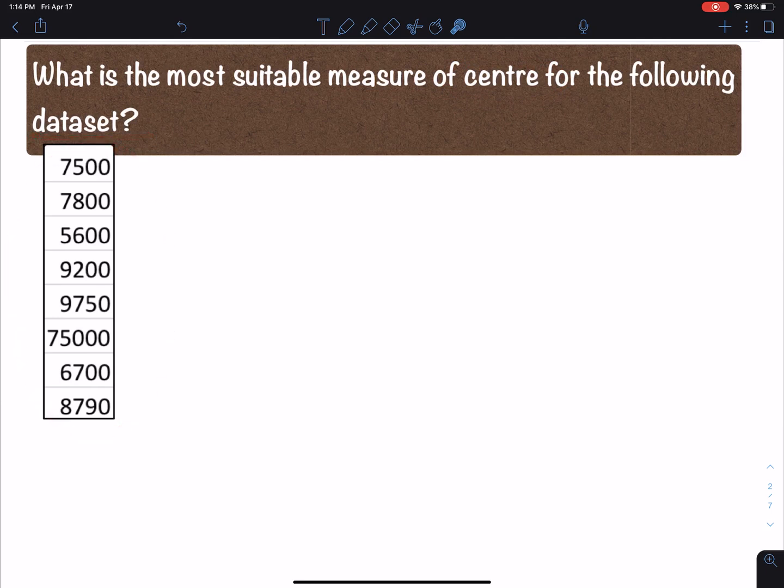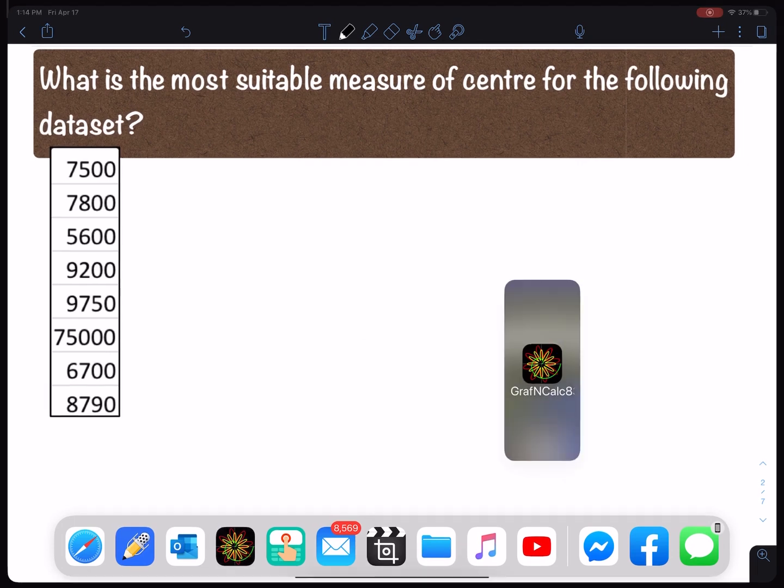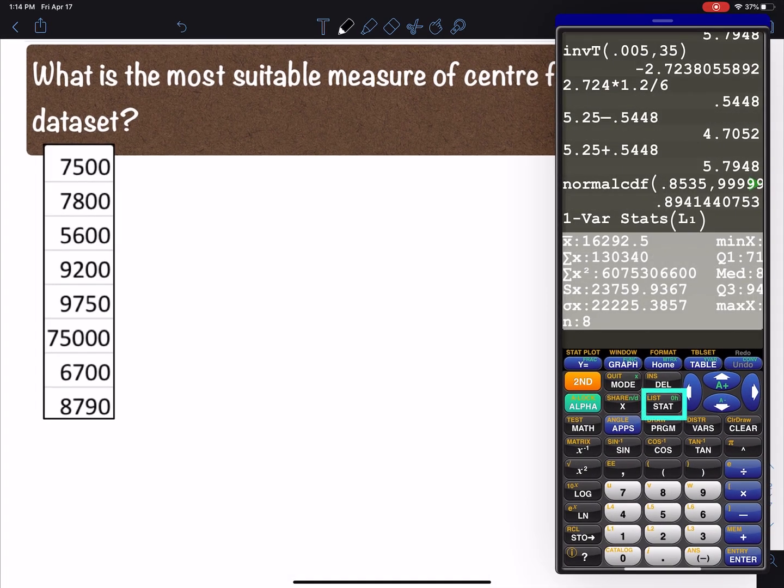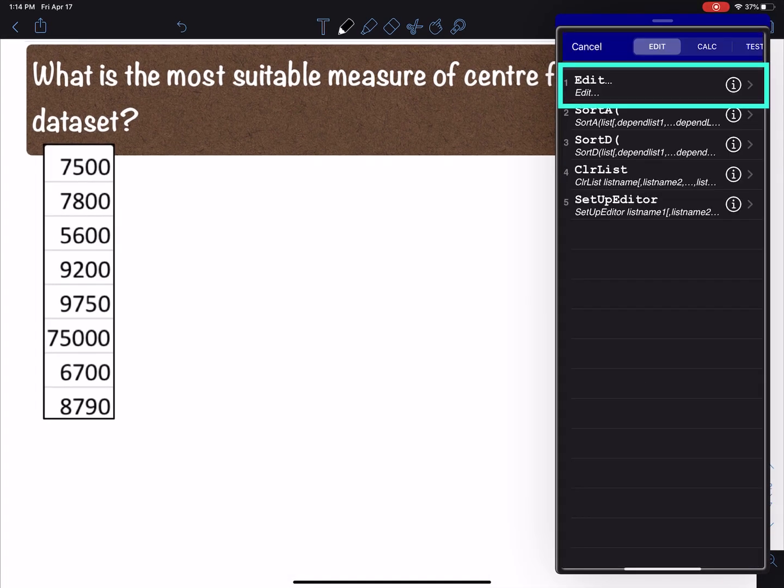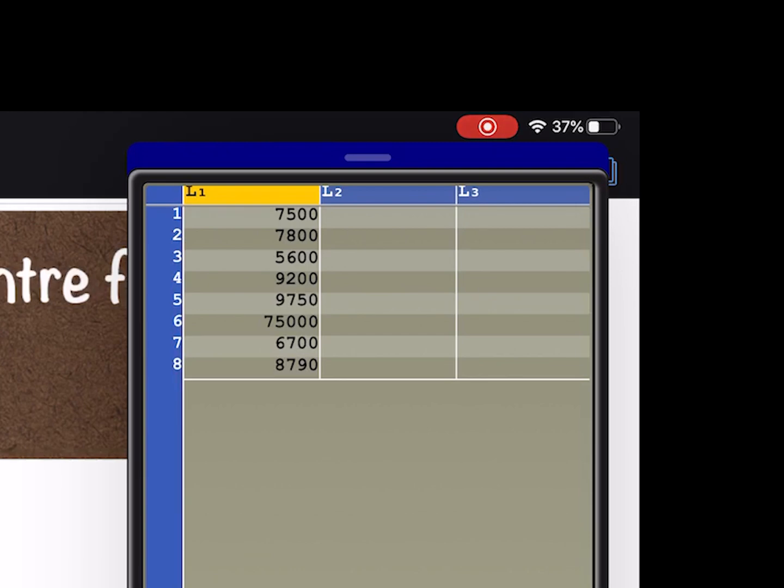We have this dataset right here and I want to point out this value right here seems kind of big. What's up with this value? Is that going to affect our choice? Well let's see. Let's take a look at the data by plugging it into a calculator. So if I go to stat edit and I plug it into list one, L1, I already have it plugged in.